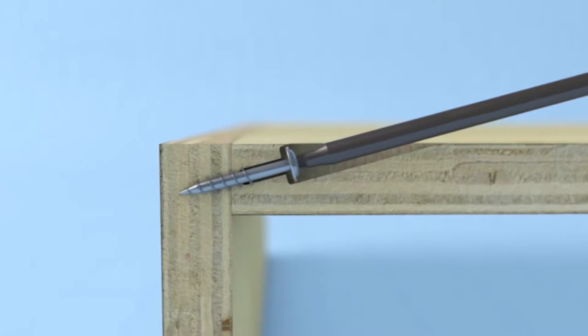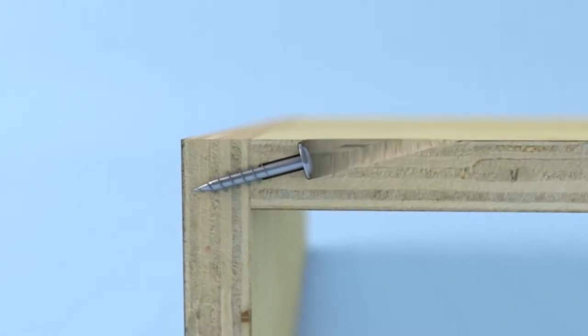The self-tapping screw pulls the pieces tightly together for a joint that's strong and secure without unsightly fasteners or messy glue.